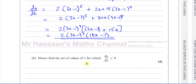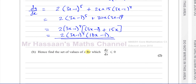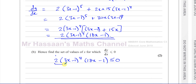Part B says: hence find the set of values of x for which dy/dx is less than or equal to 0. So we need 2(3x minus 1)^4(18x minus 1) ≤ 0. Now we know for sure that 2 is positive and (3x minus 1)^4 is always positive — the lowest it can be is 0, which occurs when x equals 1/3. So that's one of the solutions.